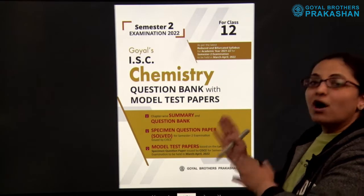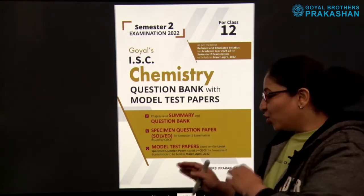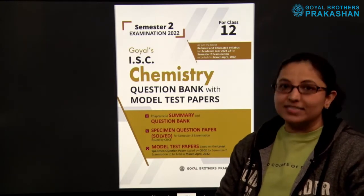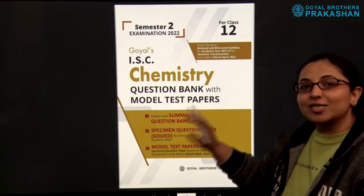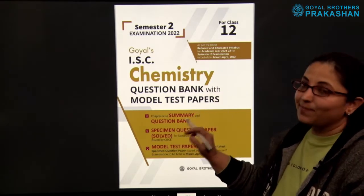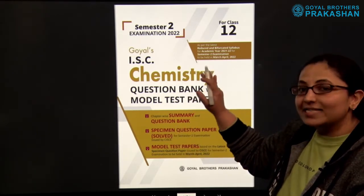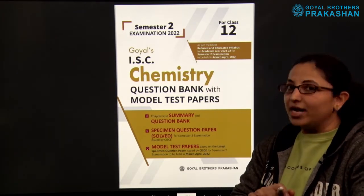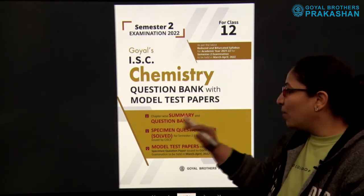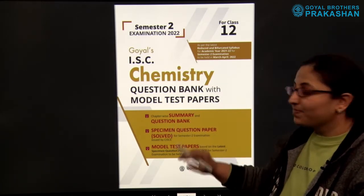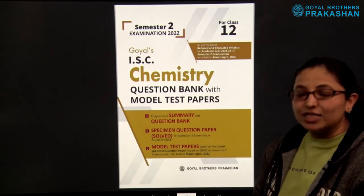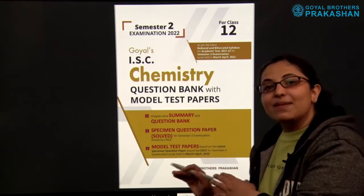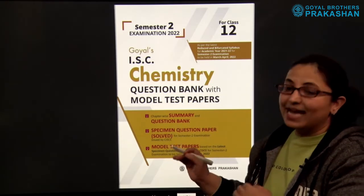This is the book for chemistry released by Goyal Brothers Prakashan. They have released a set of different books in different subjects. For chemistry, this is basically a question bank with model test papers, as per the latest reduced and bifurcated syllabus for academic year 2021-22. This book has chapter-wise summary, question bank, the specimen question paper released by the council, and model test papers strictly based on the specimen question paper released by CISCE.